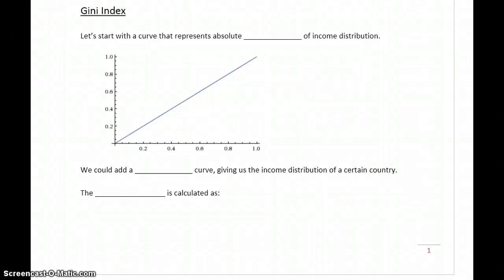The first application we want to talk about with area between curves is called the Gini Index. The Gini Index is a single number used to tell us about the income distribution in a certain country or region. The first thing we want to do is start off with a curve that would represent absolute equality of income distribution.